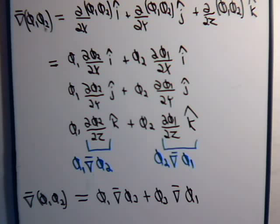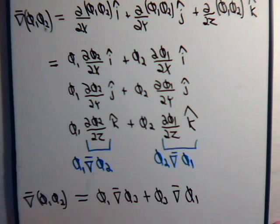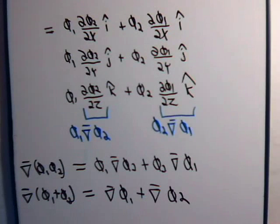Which really, if we had thought about it ahead of time, we probably could have predicted — because we have two functions multiplied together, and we want to take their derivatives. That's what the del operator is: a differentiation operator. When you have two functions multiplied together and want to take derivatives, you hold the first one constant and take the derivative of the second, plus you hold the second one constant and take the derivative of the first. It comes out exactly as we should have expected. No big surprise — and when we're adding scalars together, it's simply the gradients added together.